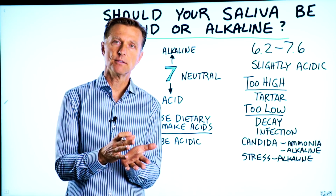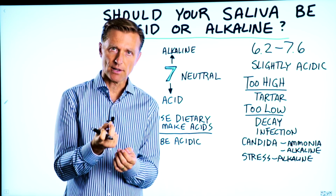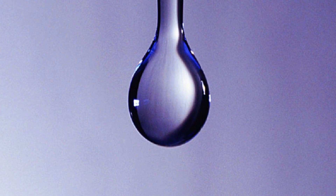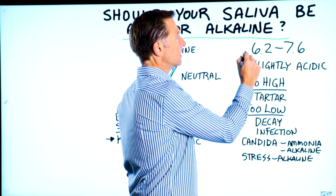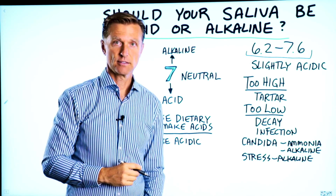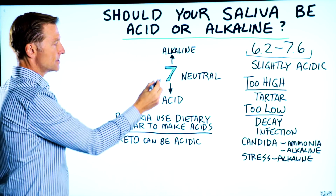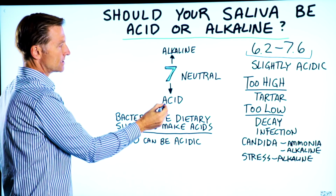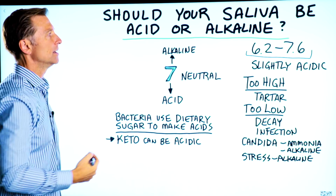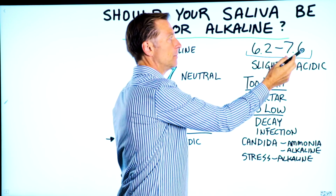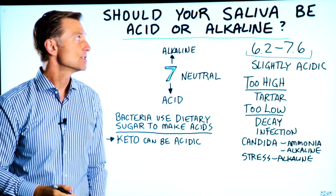Someone had a question recently related to the pH of saliva, very concerned about their pH being too acid or too alkaline, and they wanted to know what it should be. The normal pH range of saliva is between 6.2 and 7.6. Anything above 7 is alkaline, anything below 7 is acid, with 7 being neutral. So your saliva could be slightly acidic or slightly alkaline — it can be both.